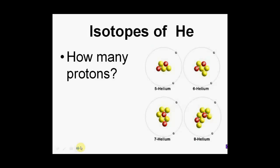This is helium. Helium occurs in four different forms. How do I know it's helium? Each one of these actually has two protons. In the diagrams, red represents the protons and yellow represents the neutrons. This first one has two protons and three neutrons.